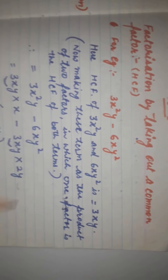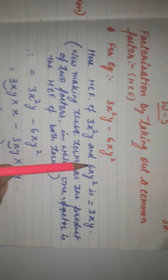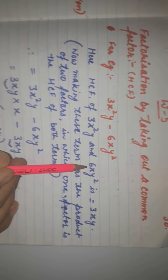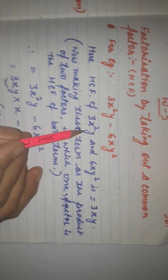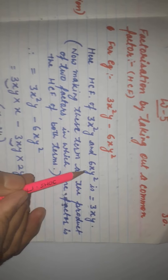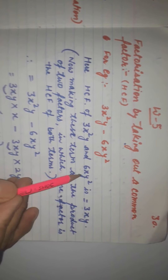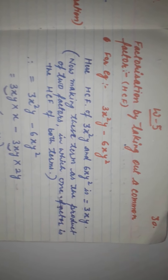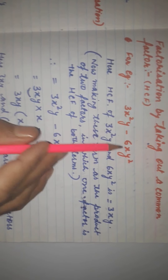Similarly, we have to find the HCF of the two terms 3x²y and 6xy². The coefficients are 3 and 6, so the highest common factor of the coefficients is 3. The highest common power of x in x² and x is x. The highest common power of y in y and y² is y. Therefore, the HCF of 3x²y and 6xy² is 3xy.